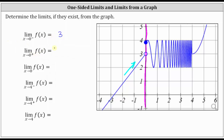Next, we have the limit of f of x as x approaches zero from the right or positive side. To determine this limit, we're approaching x equals zero from the positive side or right side, from this direction here. As we get closer and closer to x equals zero from the right, notice how we are approaching a y value or function value of approximately 3.8.